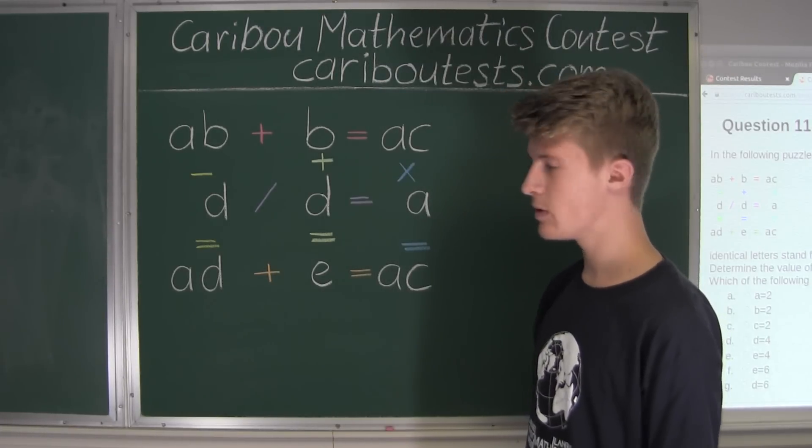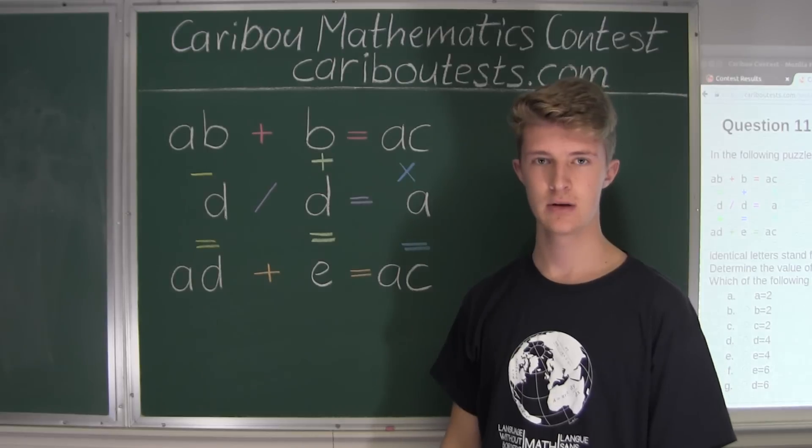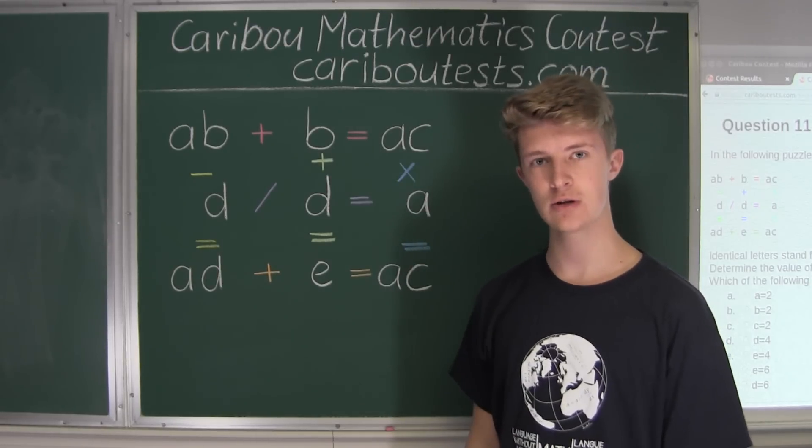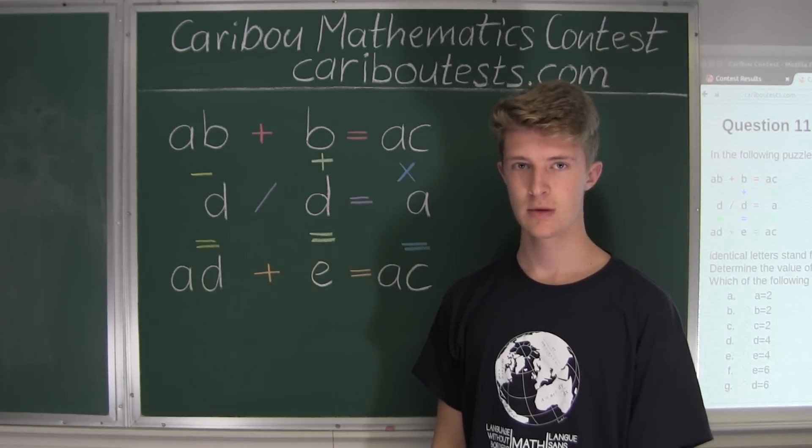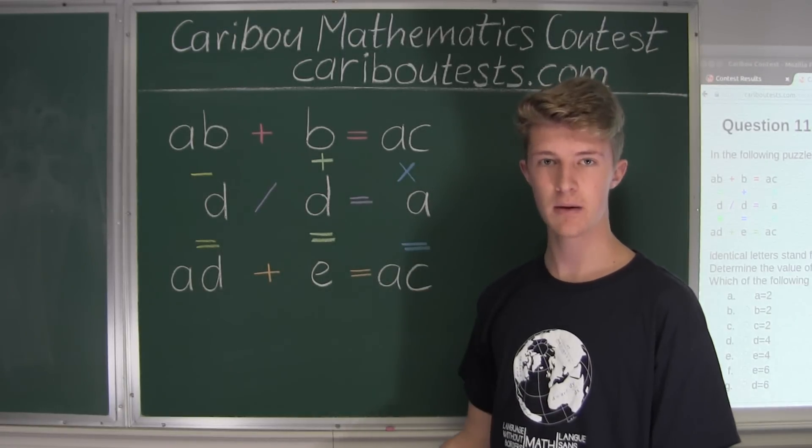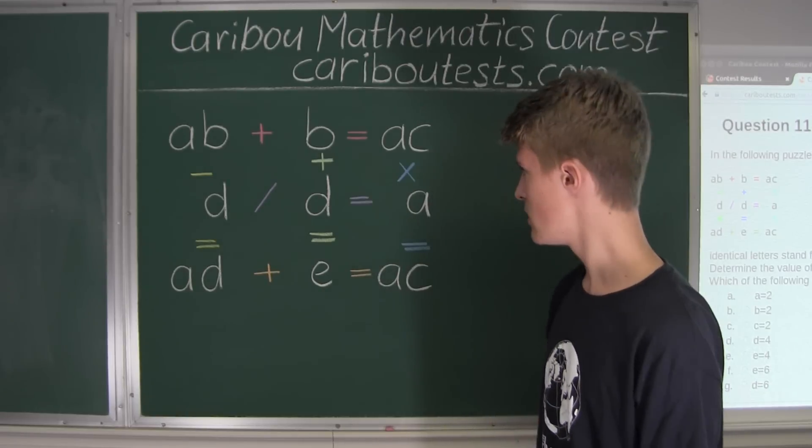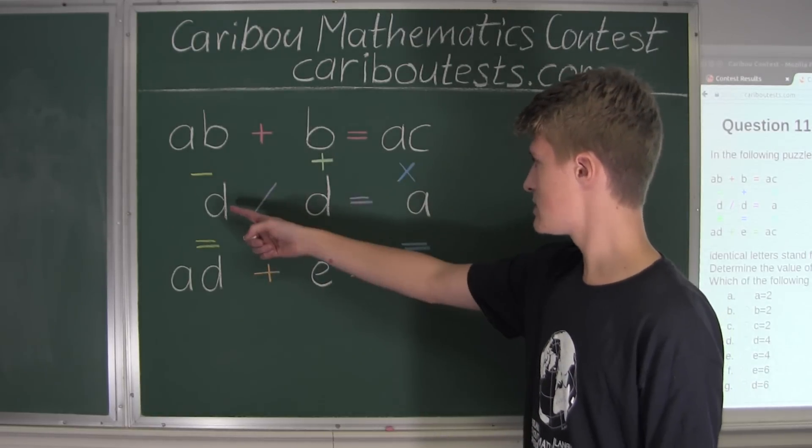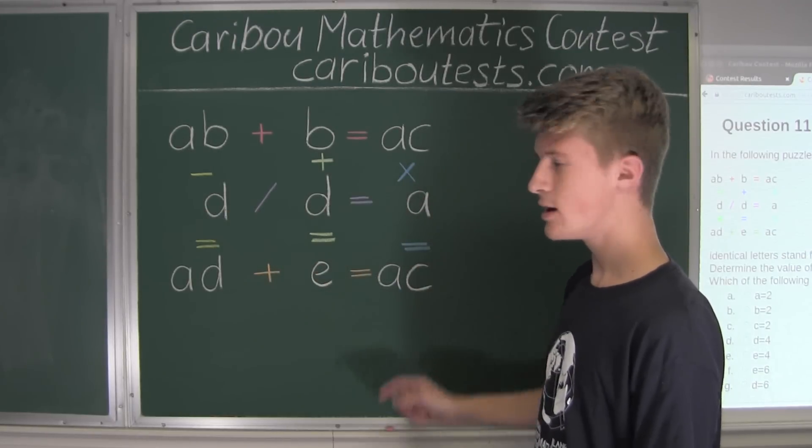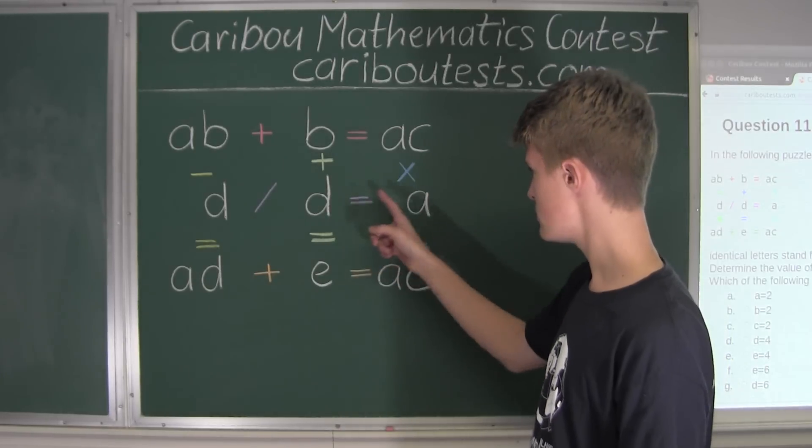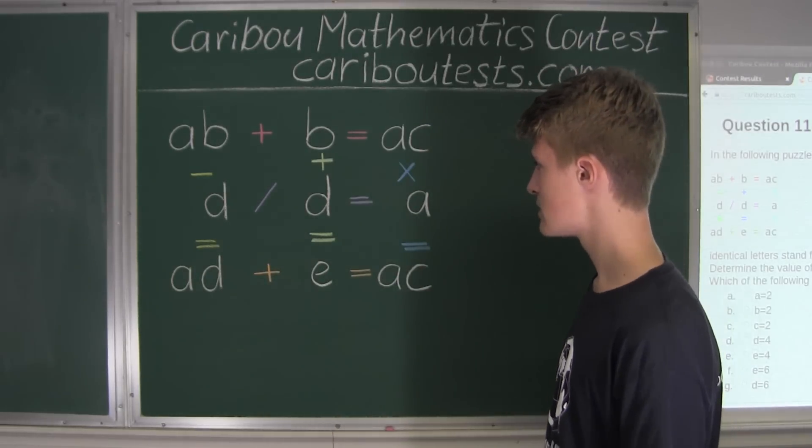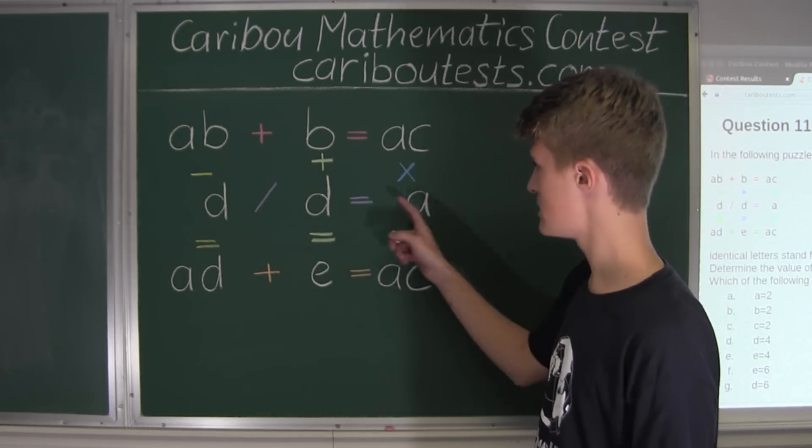Now, what we want to do is find the easiest equation. How do we find the easiest equation? It's the equation with the least unknowns. And what that means is it's the equation with the least number, or least letters that we don't know the value to. So that would be this middle equation right here, which is D divided by D is equal to A, because there's only two letters, two different letters with unknown values, and that would be A and D.